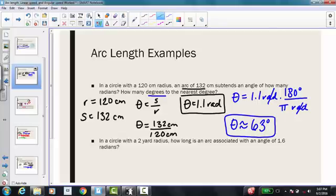This next example says, in a circle with a 2 yard radius, how long is an arc associated with an angle of 1.6 radians?